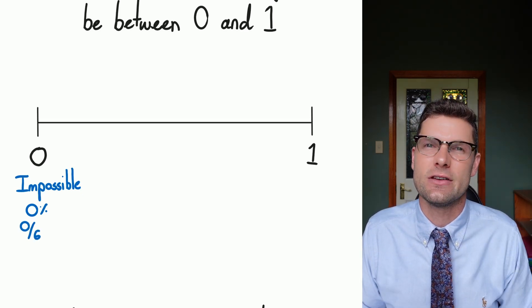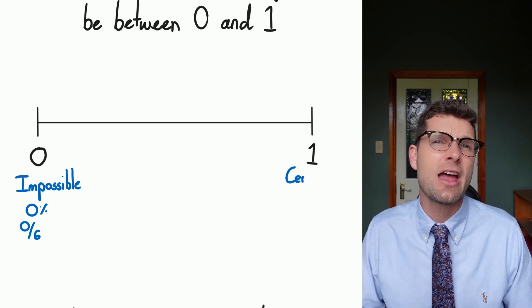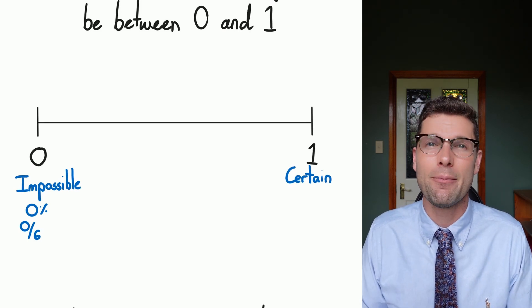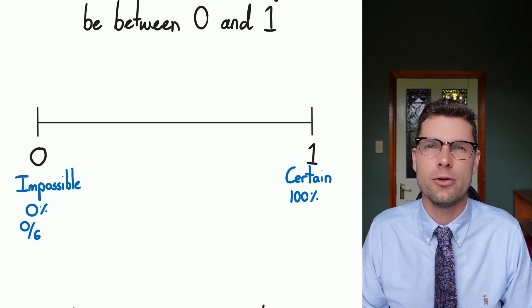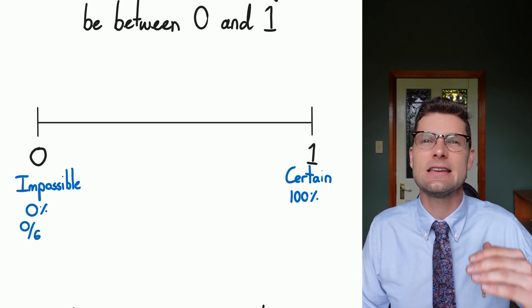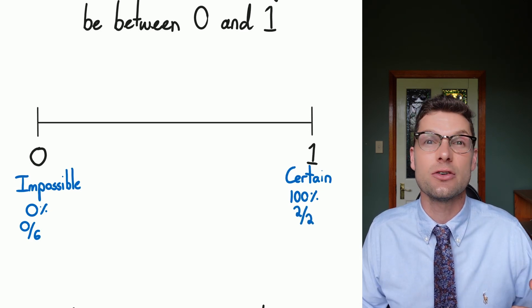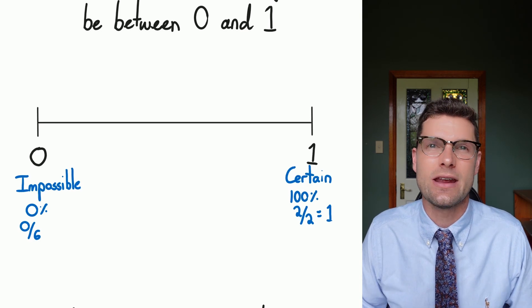So that means that our number line goes from zero to one. Zero is there is no chance that this will happen, or this is something that is impossible. Another way to think about this is if you have a fraction with zero divided by the sample space, that couldn't happen. So you have zero percent. And on the other end of the spectrum, you've got one. This means 100% chance that it will happen, or that an event is certain to happen. There's no chance it won't. Another way to think about this is if your desired outcome is divided by all the outcomes that are possible. So six over six, you would get 100% chance that you win.